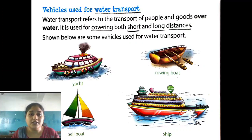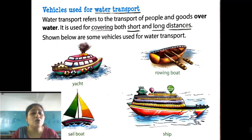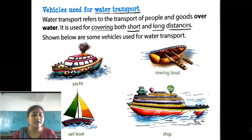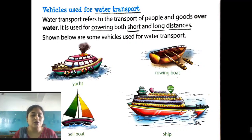We understood about the vehicles. Vehicles are the machines that we use to go from one place to another. And then we understood about the modes of transport. There are 3 modes: land transport, water transport, and air transport. About land transport we understood in the last class.